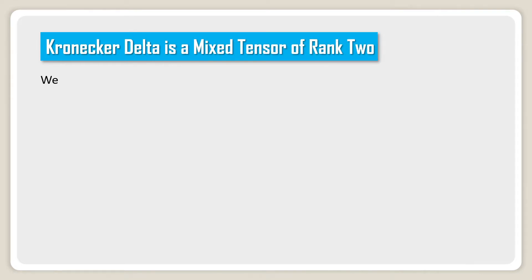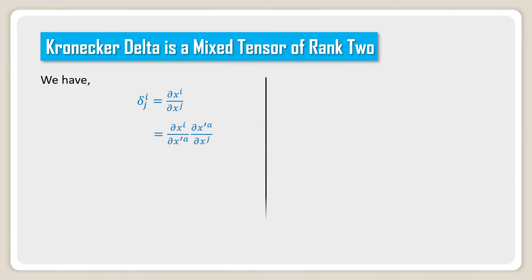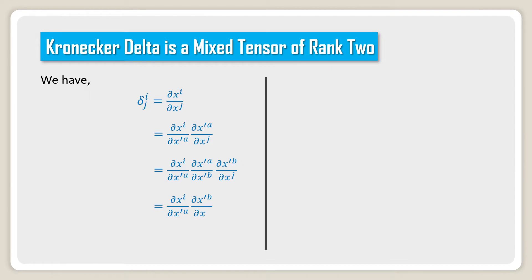Kronecker delta is a mixed tensor of rank 2. We have delta i^j is equal to del x^i by del x^j, and this del x^i by del x^j can be written as del x^i by del x'^a into del x'^a by del x^j.